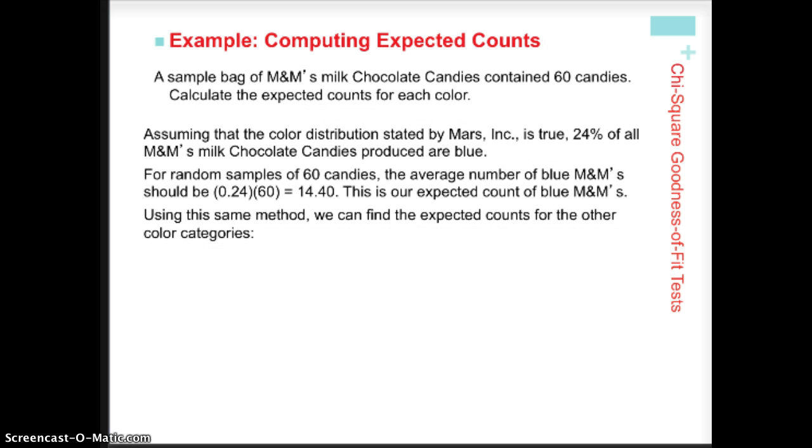And that gives us, in this case, 14.40 is how many blue M&Ms we should have gotten if the proportions were exactly what they're supposed to be based on what the Mars Company advertises. And that's how we're going to calculate all of our expected values.